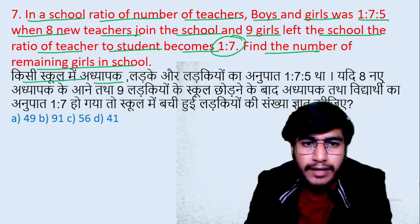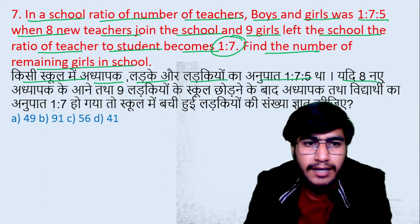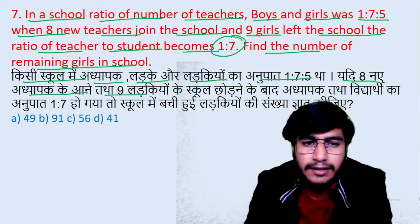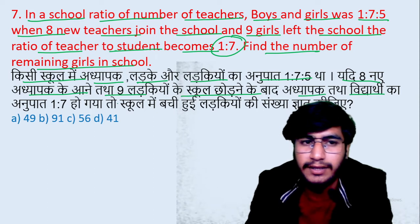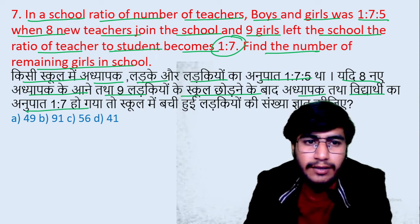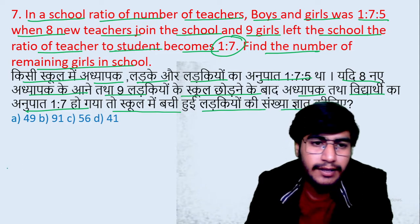Kisi school mein adhyapak, ladke, aur ladkiyon ka anupat ek anupat saath anupat paanch hai. Kisi school mein 8 adhyapak ke aane tatha 9 ladkiyon ke school chhodne ke baad, adhyapak tatha vidyarthi ka anupat kya hoga? Ek anupat saath. To school mein bachi hui ladkiyon ki sankhya gyaat keejiye.